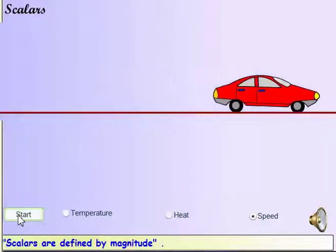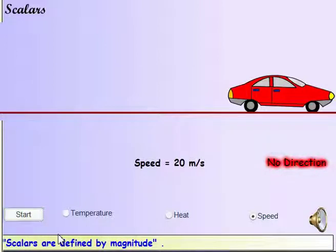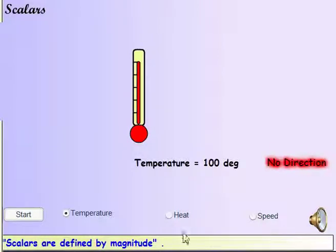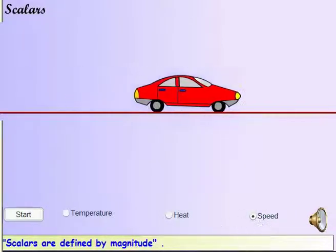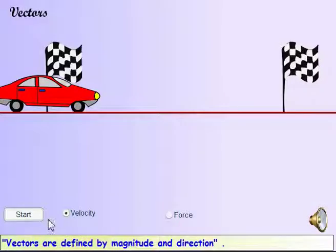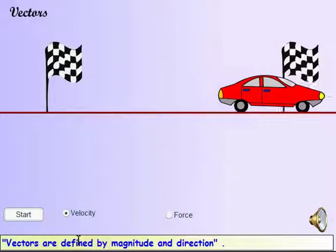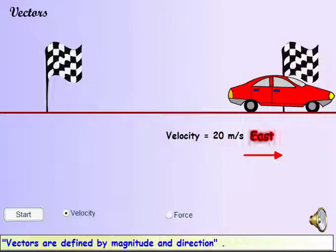A scalar has a magnitude but no direction. For example, temperature is defined as just 25 degrees centigrade, and the definition is complete without a direction. Speed is also a scalar, as we say the car is moving at 30 kilometers per hour without mentioning direction. Vectors have both magnitude and direction. We describe velocity as the car moving 30 kilometers per hour east or west. The direction is what differentiates speed and velocity; therefore, velocity is a vector and speed is a scalar.